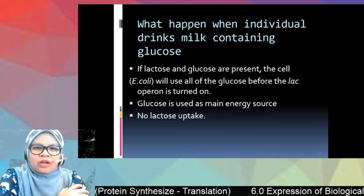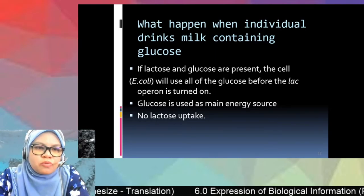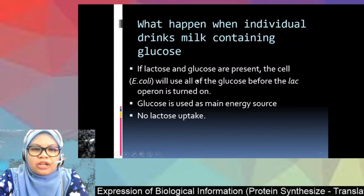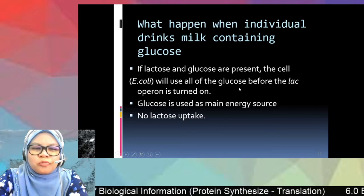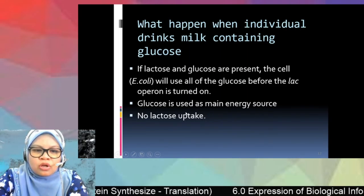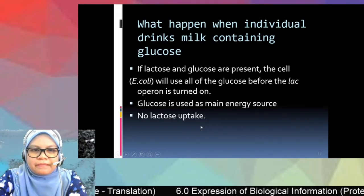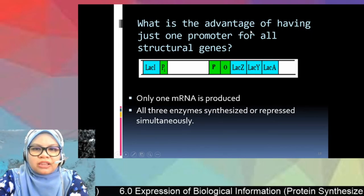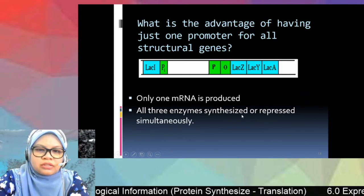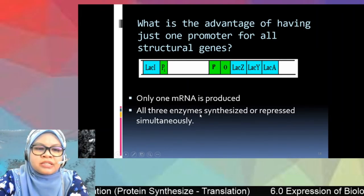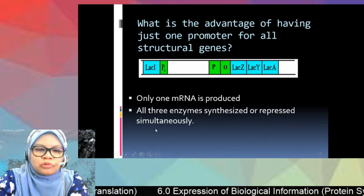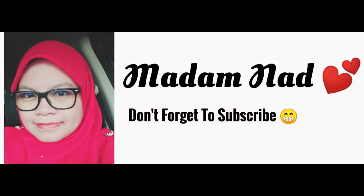Here are two frequently asked exam questions. First: what happens when an individual drinks milk containing glucose? If lactose and glucose are both present, the cell will use all the glucose first before the lac operon switches on — glucose is used as the main energy source. Second: what is the advantage of having just one promoter for all structural genes? The advantage is that only one mRNA is produced and all three enzymes are synthesized simultaneously.